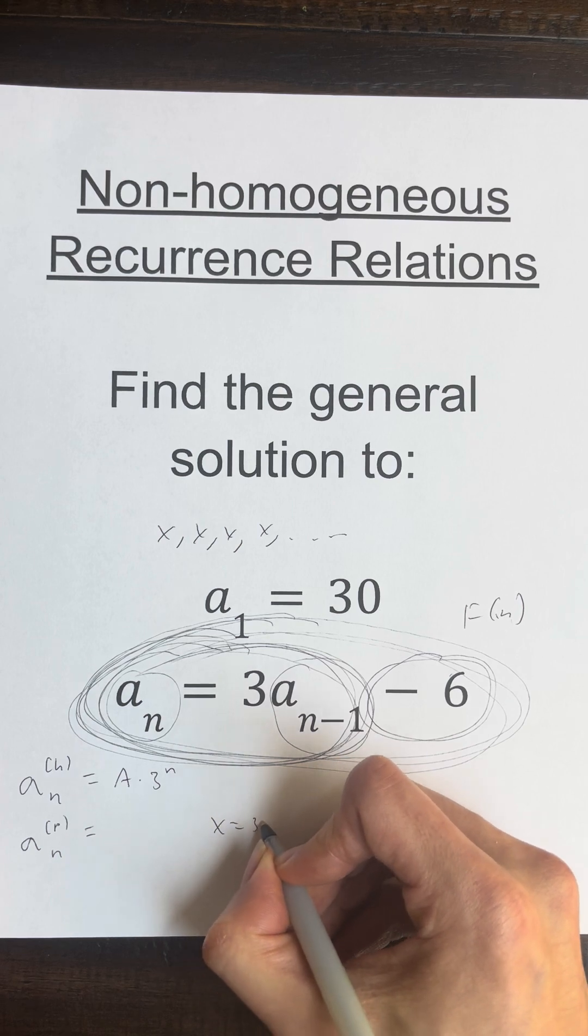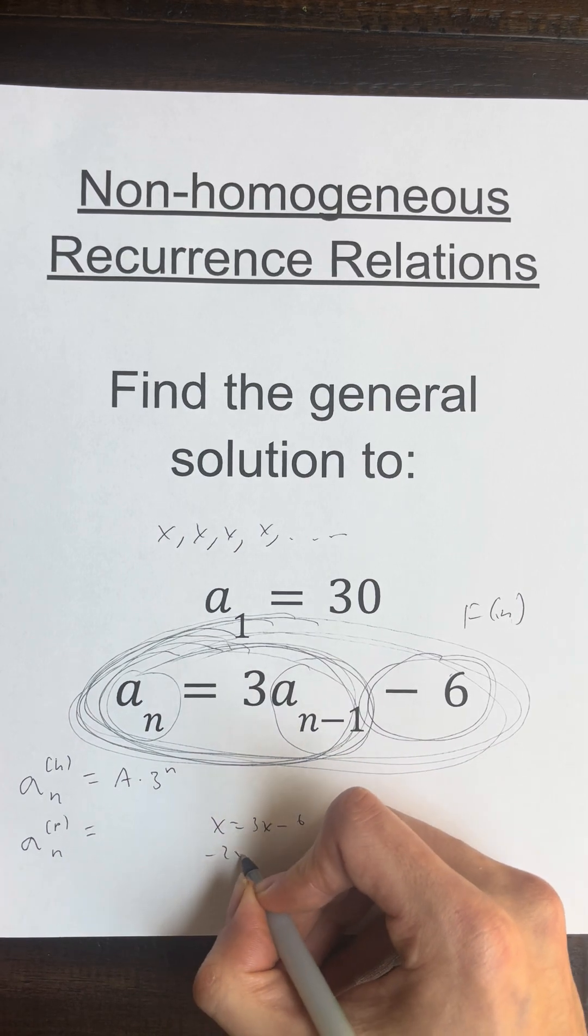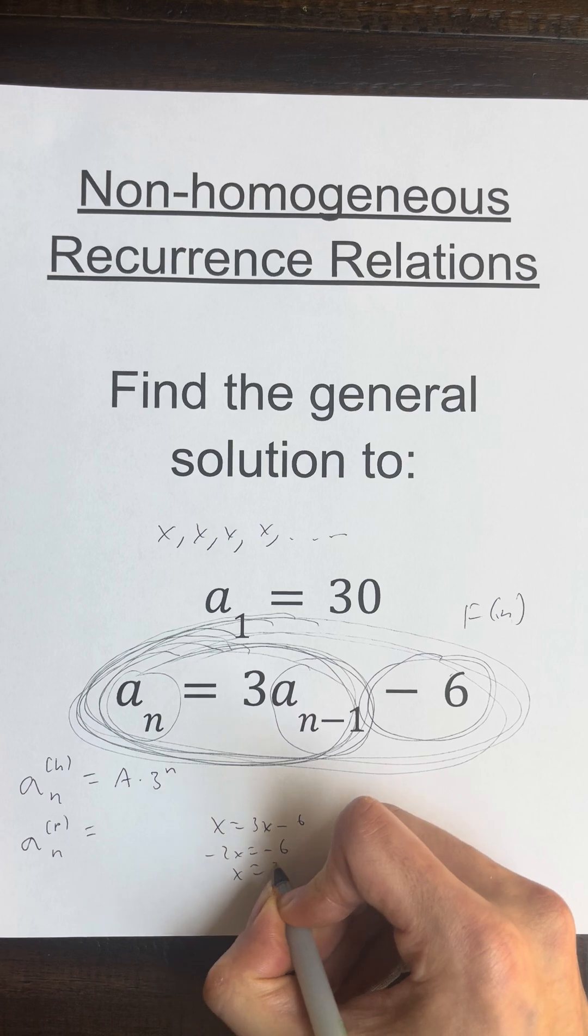So x is equal to 3x minus 6. So negative 2x is equal to negative 6, x is equal to 3.